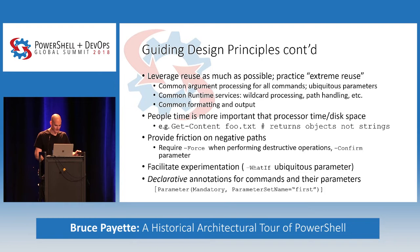People time is more important than processor time or disk space. At the time, it was reasonable to have a whole system to yourself, so throwing away resources to make the user faster was a non-issue. That's changed a little bit with multiple VMs on a physical machine and IoT and resource-constrained environments. Some of the earlier decisions we made regarding resource consumption are biting us a little bit now as we move into these more constrained spaces. You can see in PowerShell v6 where we're evolving and reducing some of the footprint.